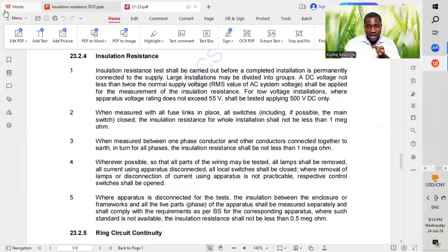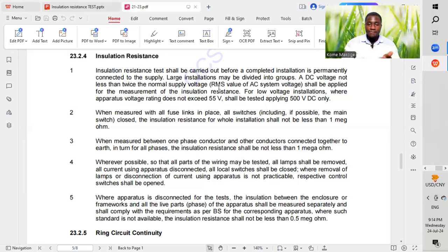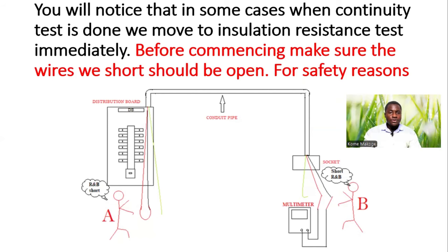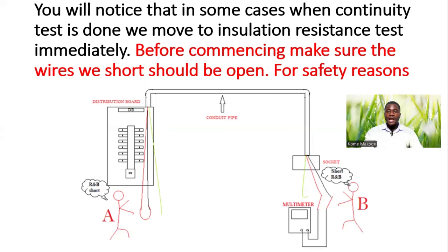So we get to understand how to carry out the test. The code tells us that a DC voltage, which is not less than twice the normal voltage, has to be applied, which will be injected by the insulation resistance tester. In some cases when continuity test is done, we move to insulation resistance test immediately. Once we are done with continuity test, we move immediately to carrying out insulation resistance test or mega test.